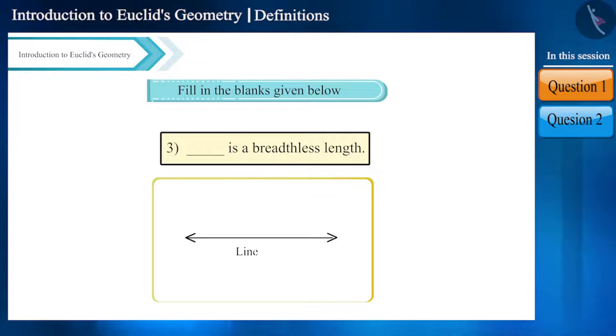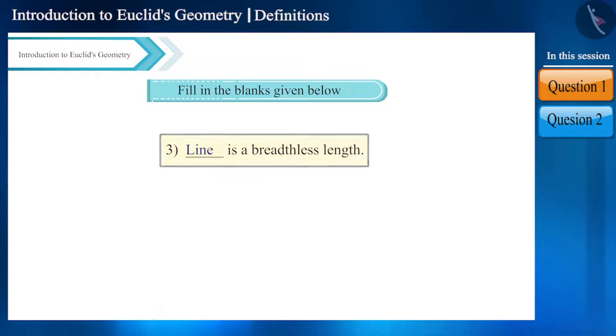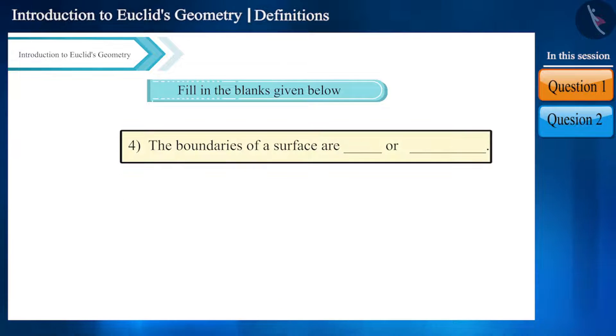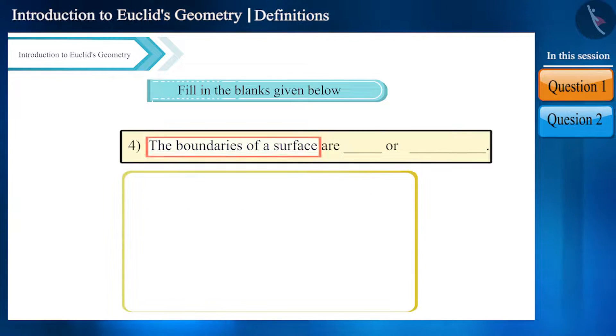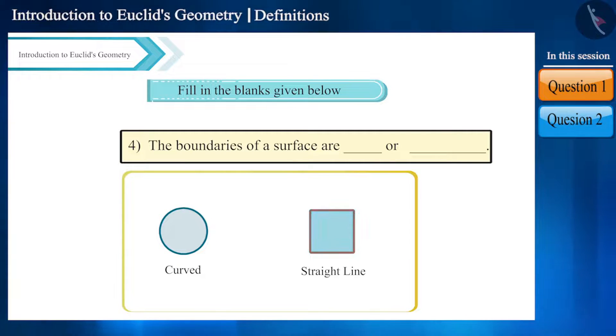Look at the fourth and the last blank. Here we are talking about surface boundaries. The boundaries of a surface are either curved or a straight line. Therefore the answer for the first blank will be curved and for the second blank it will be straight line.